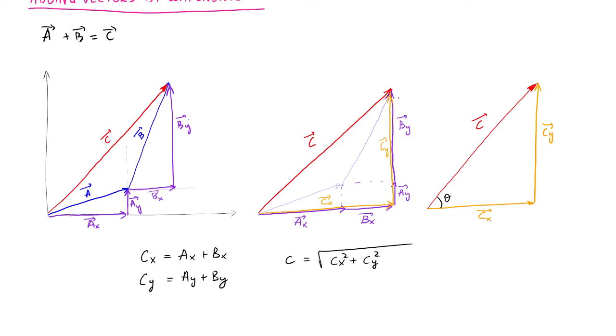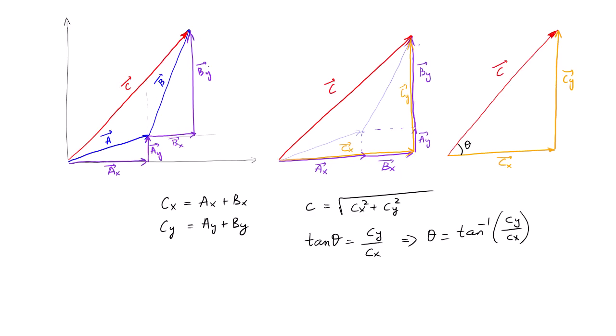The easy way, because we already have CX and CY, we're going to use the tangent theta function, which is the opposite over the adjacent side — that is CY over CX. Then finding theta is simply tangent inverse of CY over CX. Let's take a look at an example that will make this make more sense.